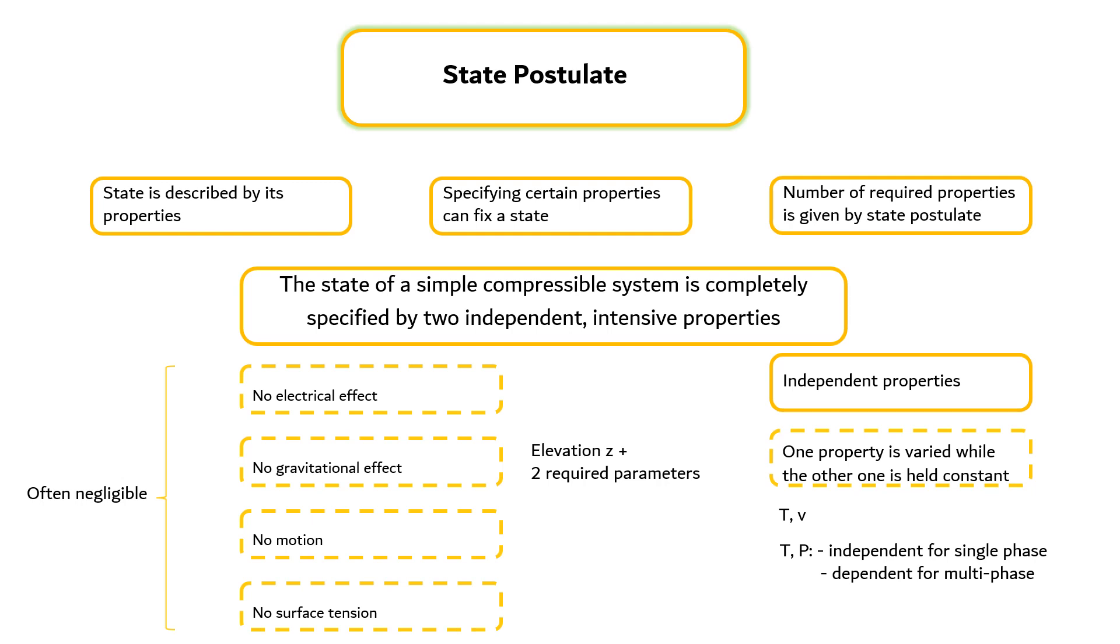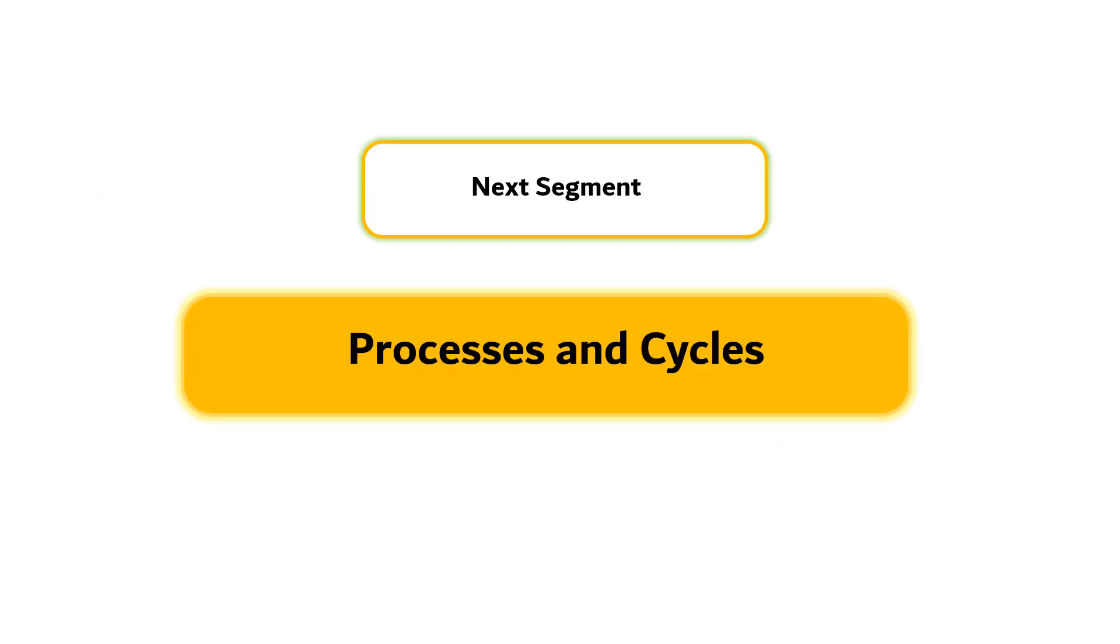At sea level, water boils at 100 degrees Celsius, but on a mountain top where the pressure is lower, water boils at a lower temperature. Temperature is a function of pressure during phase change processes, and consequently temperature and pressure are not sufficient to fix the state of two-phase systems.